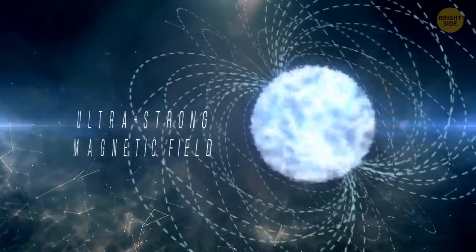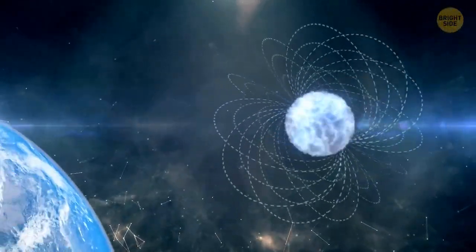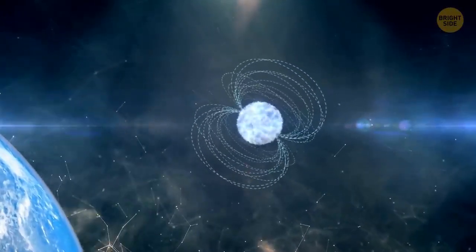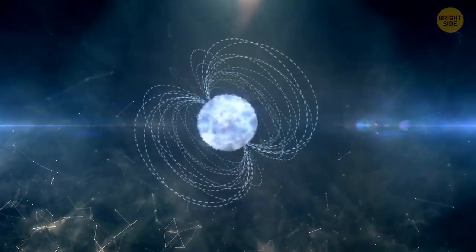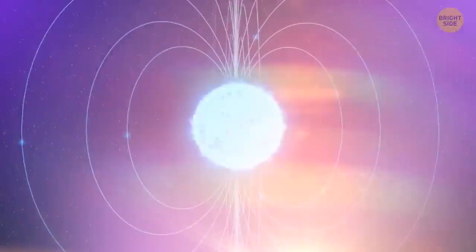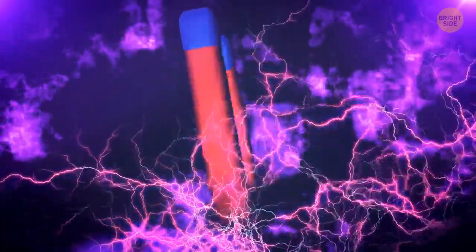That's a rare form of a neutron star with an ultra-strong magnetic field. It's 1,000 trillion times stronger than our planet's. This field is also so powerful, it heats the star's surface up to 18 million degrees Fahrenheit. Simply put, magnetars are the most powerful magnets in the universe.